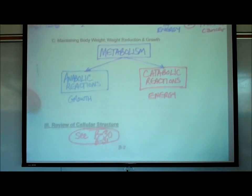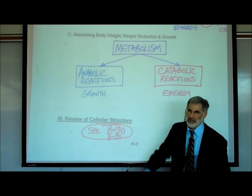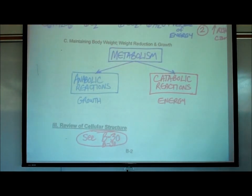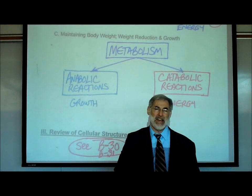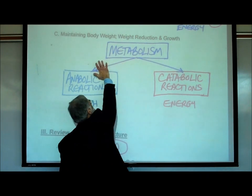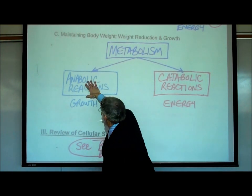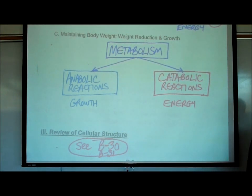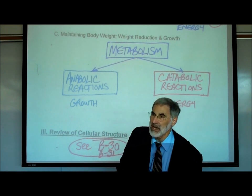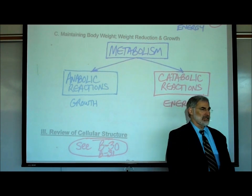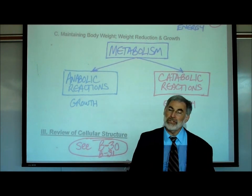On page B2, under letter C — 'maintaining body weight, weight reduction and growth' — I've written this diagram to help us understand the two categories of biochemical reactions. All the biochemical reactions occurring in you are called your metabolism. We divide them into anabolic reactions and catabolic reactions. Anabolic — we've seen that word before when we spoke of anabolic steroids like testosterone. Anabolic reactions are growth reactions occurring in our body all the time.